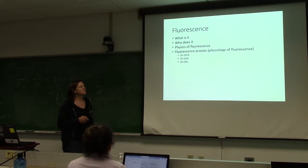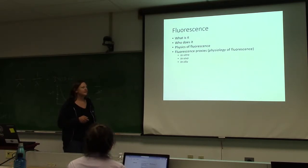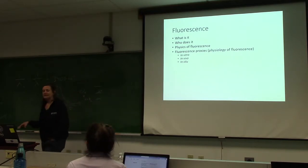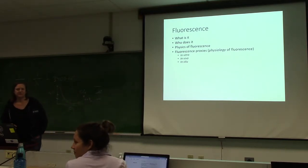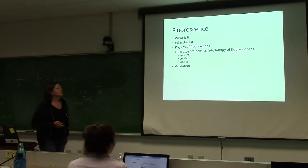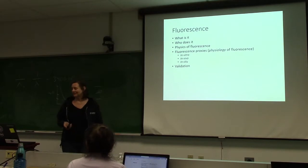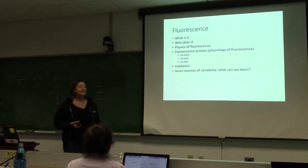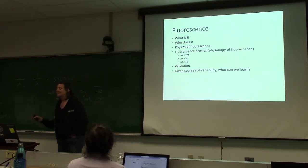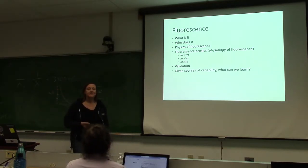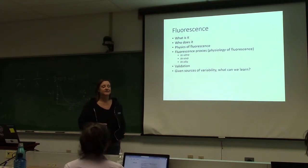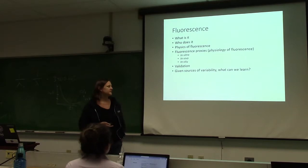We'll talk about what happens when you measure fluorescence in vitro, which is in a test tube; in vivo, which is in a cell; and in situ, which is in the location where you're measuring it — so in the ocean. Then we'll talk about the scary word: validation. What does fluorescence actually mean, and can you validate that signal? And given all the sources of variability, what can we interpret and figure out about phytoplankton?